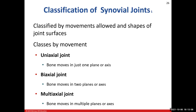When talking about types of movement, we have uniaxial, biaxial, and multiaxial — uni is one, bi is two, multi is many. An uniaxial joint means the bone moves through just one plane or axis; biaxial through two planes or axes; and multiaxial through multiple planes or axes.